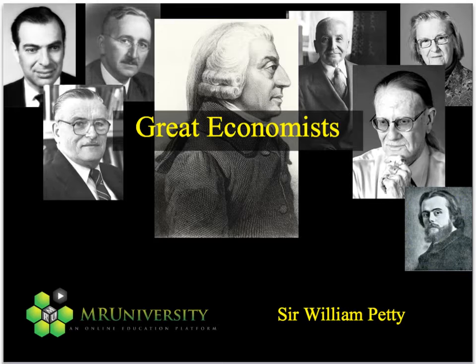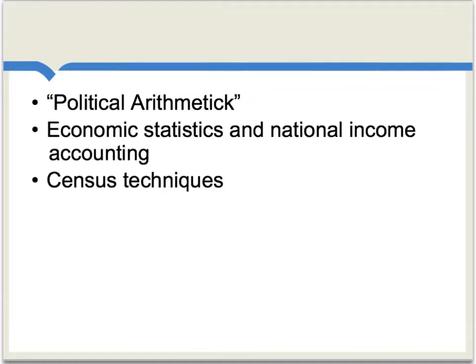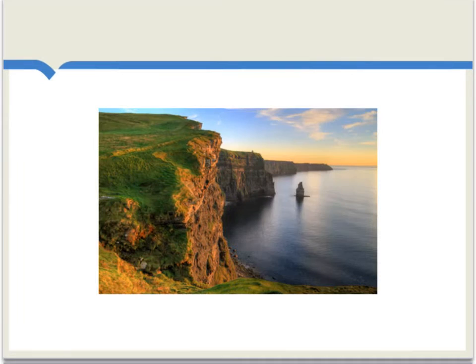Let's consider the 17th century career of the British economist Sir William Petty. Petty was born in 1623 and passed away in 1687. He is best known for what he called political arithmetic, which made him a father of economic statistics and national income accounting, in addition to being one of the first persons to develop modern census techniques.